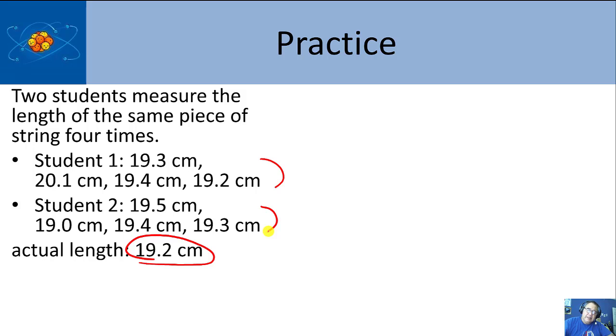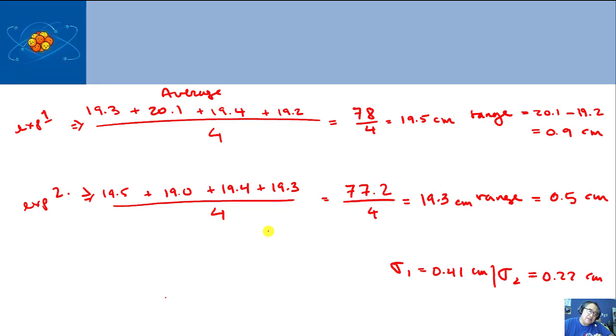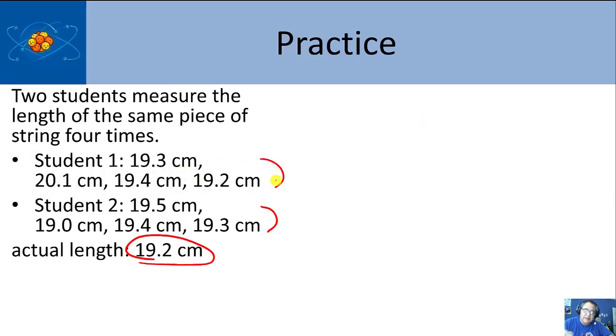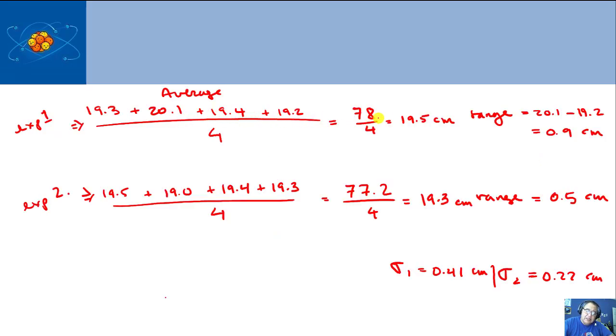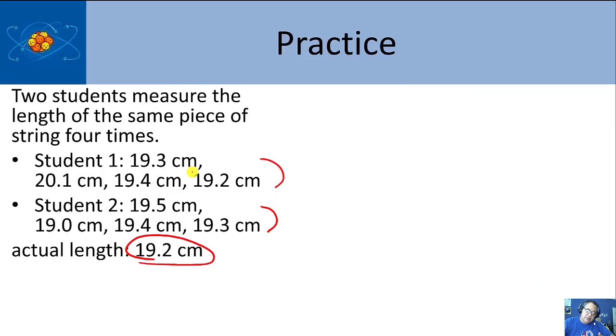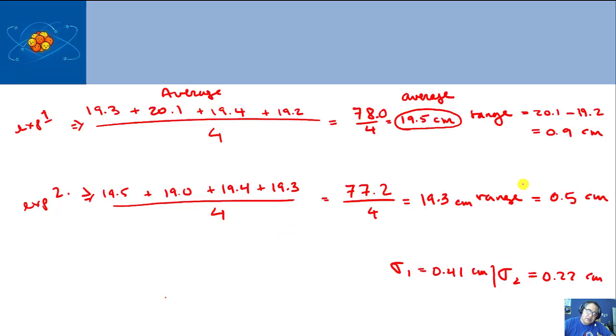How do we quantify accuracy and precision? One way to do accuracy is compare it to the average. When you do an average, I took 19.3, 20.1, 19.4, and 19.2, added them together to get 78.0. There are four values, so you take the sum and divide it by the number of values, which gives the average of 19.5. For student two, I added 19.5, 19.0, 19.4, and 19.3 to get 77.2, then divided by four to get an average of 19.3.